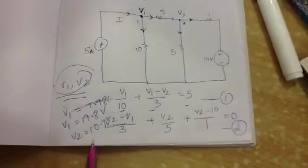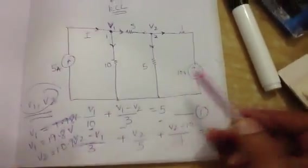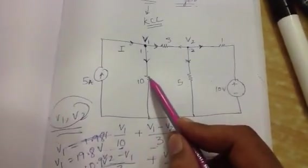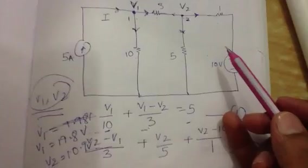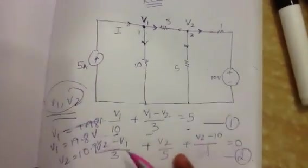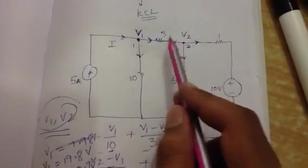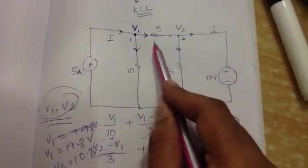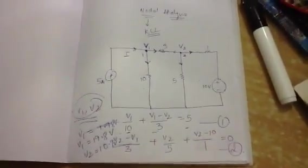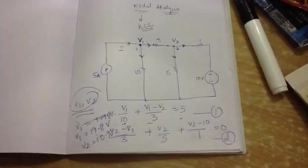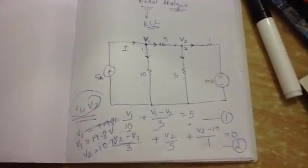Now that we have the voltages, we can find currents in the independent passive elements. Like, the current on this 10 ohm resistor can be I is equal to V by R. Right? So it's going to be 19.8 by 10. And in this one, it's going to be V1 minus V2 by 3. That's going to be the current. In this way, we can find the current in such passive elements and also the voltages in a branch or at a node by using nodal analysis.